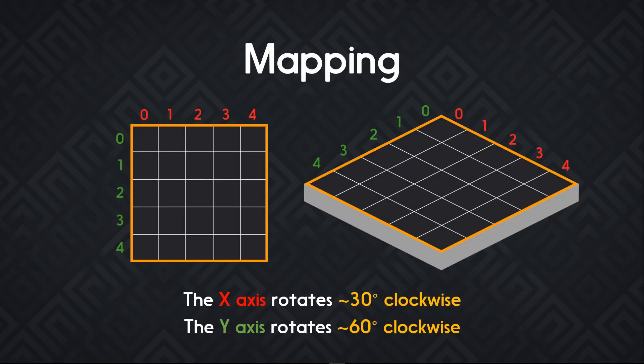As far as the mapping is concerned, if you take a grid like we designed in the previous tutorials, the top side of the grid ends on the top right side of the isometric grid. The X axis of the isometric grid is numbered in red and the Y axis is numbered in green. When we store our grid in an array, that is how you map the array to the world.